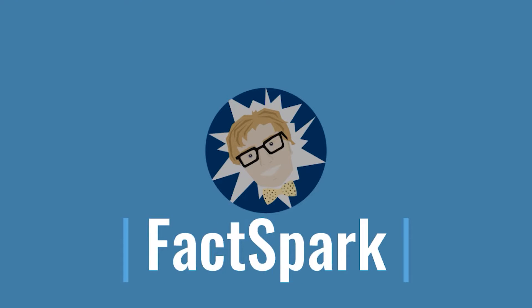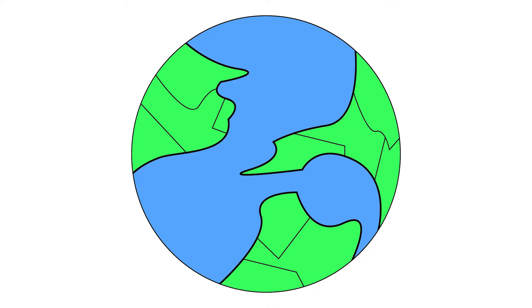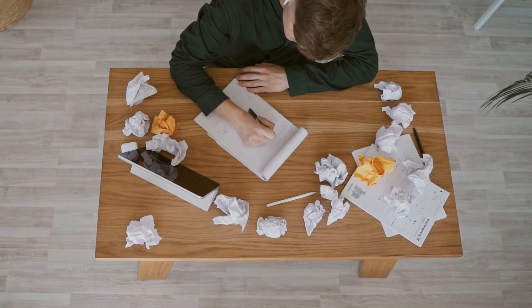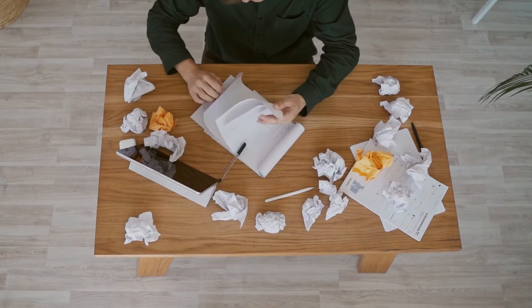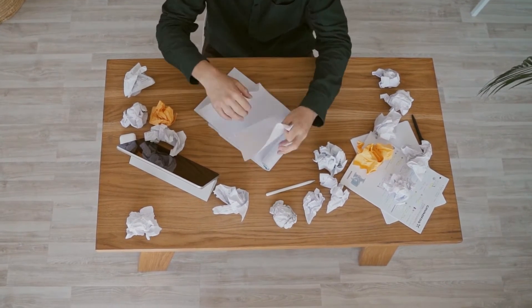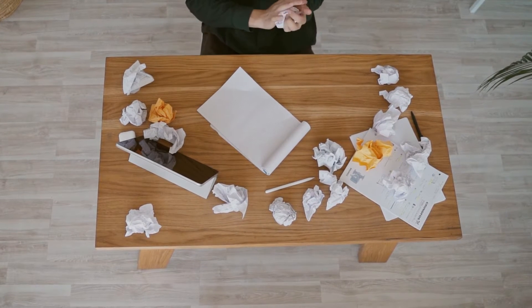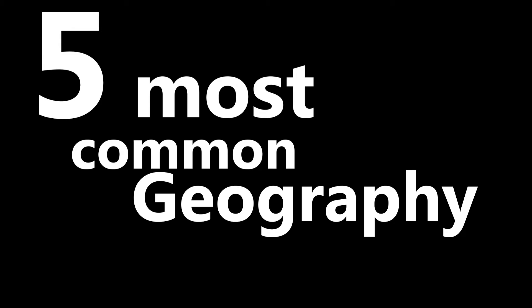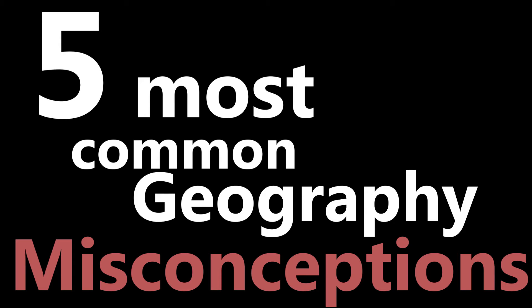Usually, geography is quite straightforward. We have our planet covered in land and sea. The land is divided by country borders and sprinkled with mountains and rivers, where you can measure the height, length and area and so on. In reality, however, there are many challenges in map making and classifying the things of the physical world around us that geographers face, which often end up as misconceptions for the general public. In this video, we'll go through 5 of these most common geography misconceptions that still prevail to this date.